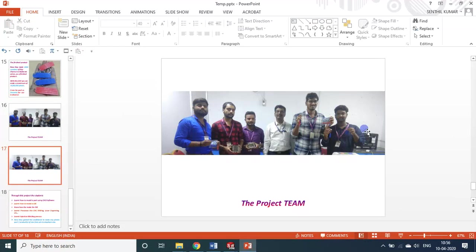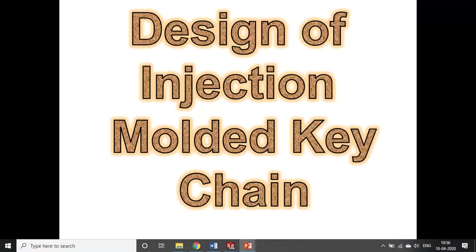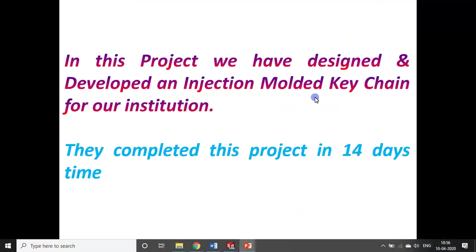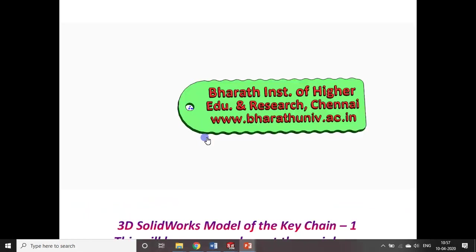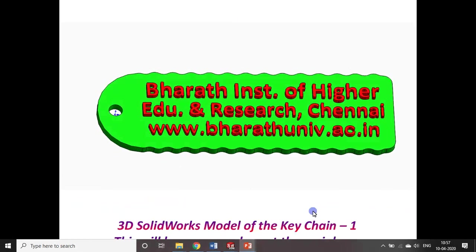We will see the procedure — how we did this project. We designed and developed an injection molding keychain for our institution. The entire design was made by myself, but the students also learned what a die is, how to design a part and a die, and they went to machining centers where they saw how the cavity and core plates were made. It is a soft PVC keychain — PVC is flexible, unlike regular plastic which cannot be bent. That is why I chose this material. This is the part designed in SolidWorks.